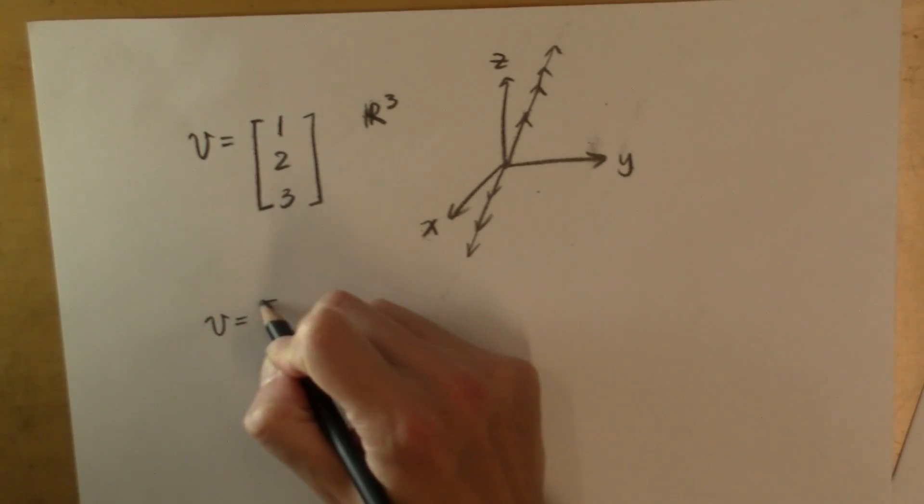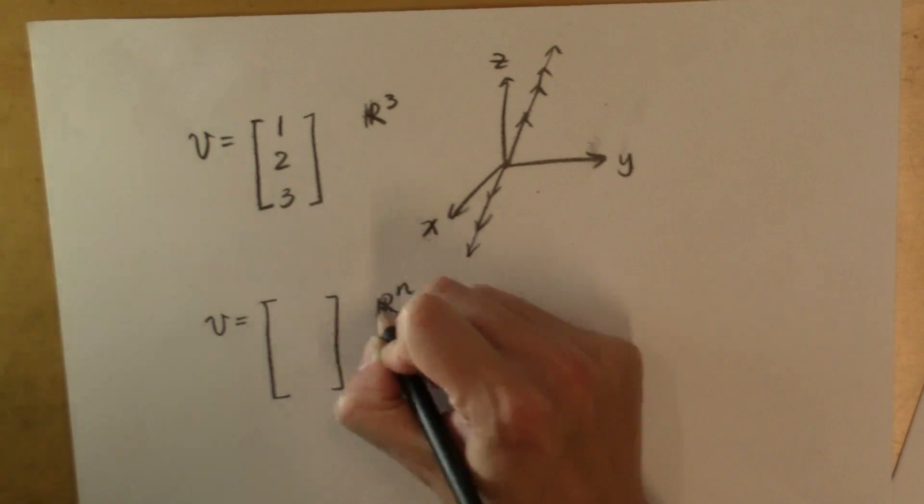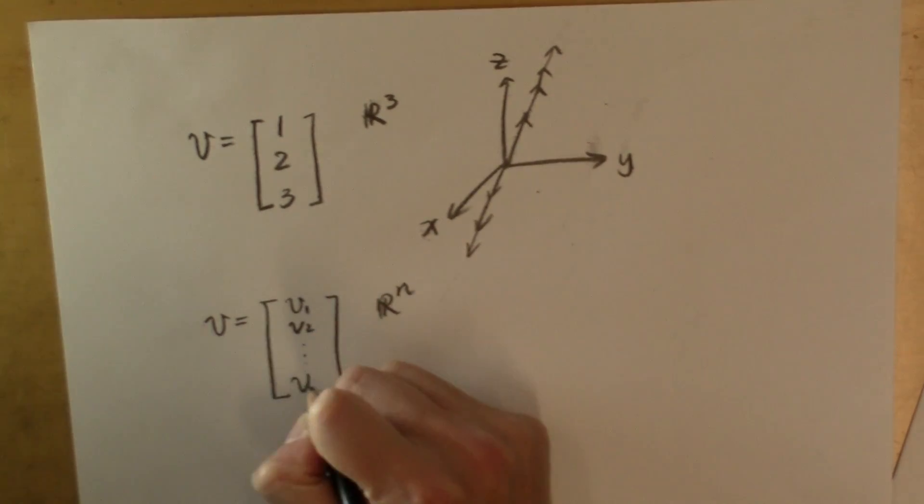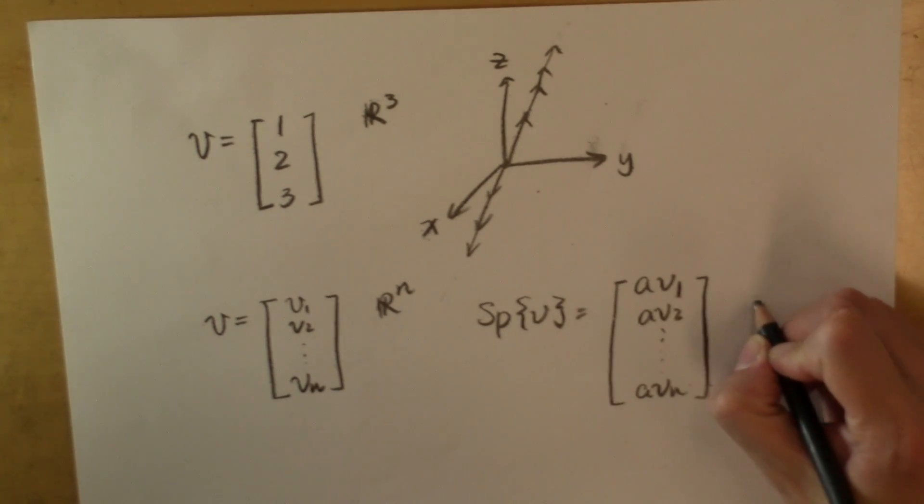You can generalize to an arbitrary vector in the n-dimensional Euclidean space. So, v is equal to v sub 1, v sub 2, v sub n, and the span of v will be all these vectors of this form where a is any arbitrary real number.